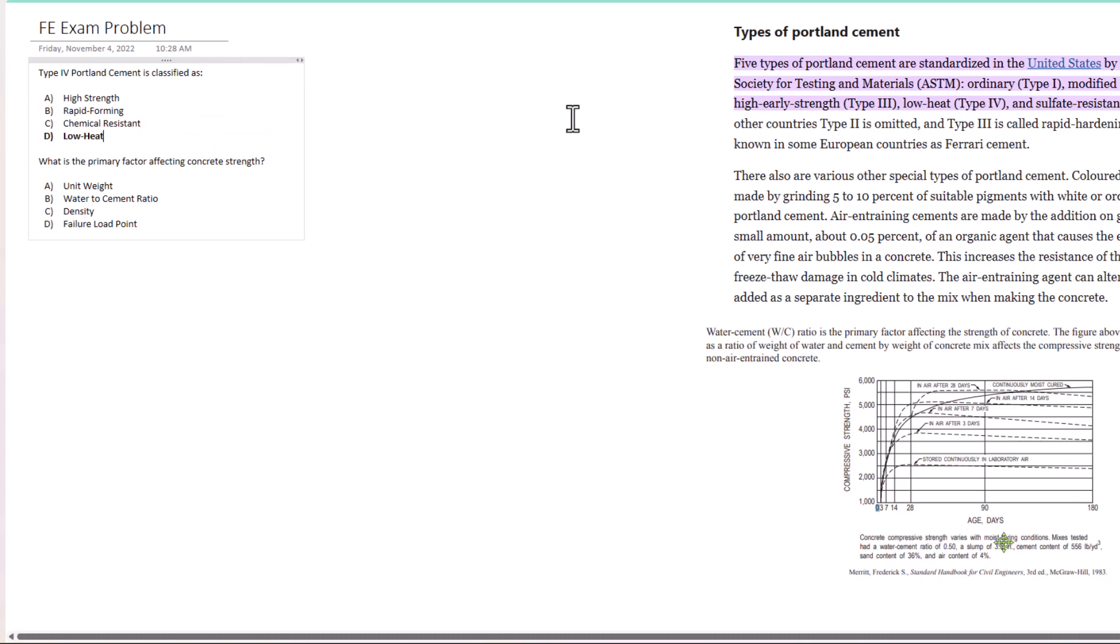Five types of Portland cement are standardized in the United States by the American Society for Testing and Materials, ASTM. We've got ordinary Type 1, modified Type 2, high early strength Type 3, low heat Type 4, and sulfate resistant Type 5. Type 4 is low heat.